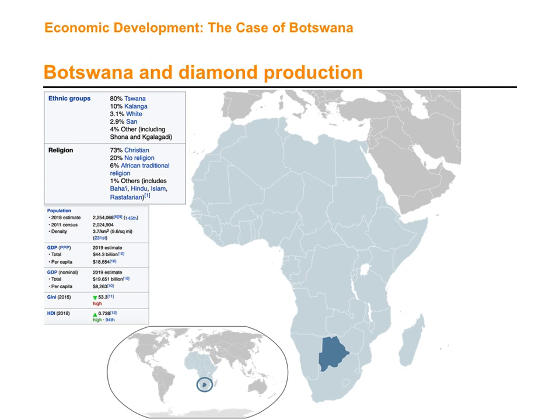Botswana is located in southern Africa — north of South Africa, to the east of Namibia, south of Zambia, and west of Zimbabwe and Mozambique. What is interesting about this country is that it has had a very phenomenal economic performance — an incredible level of economic growth.